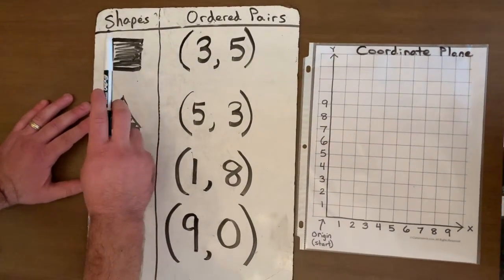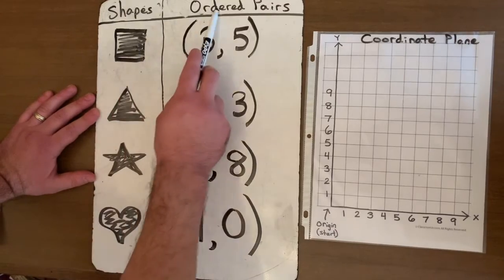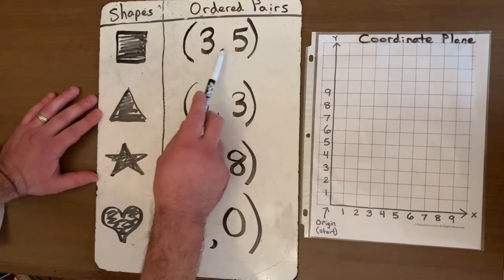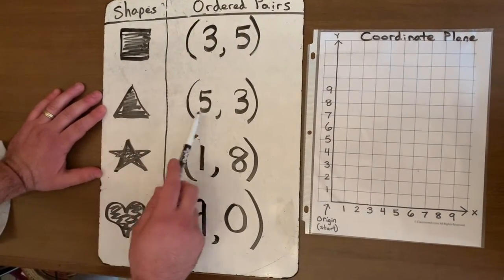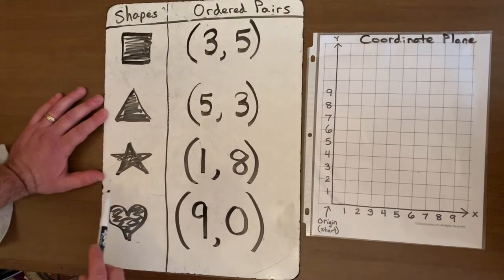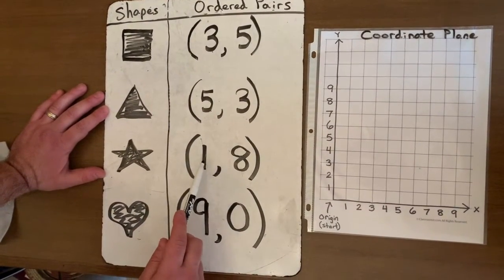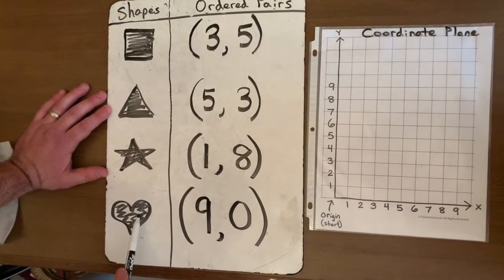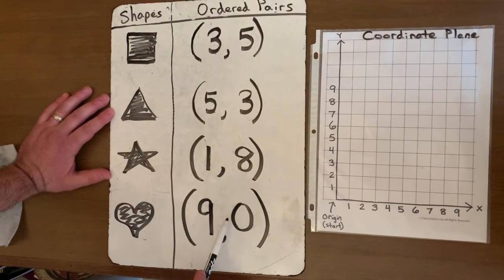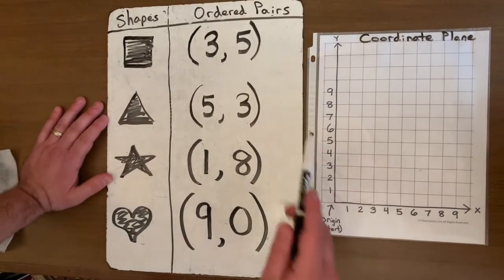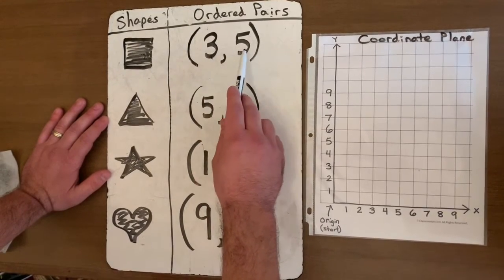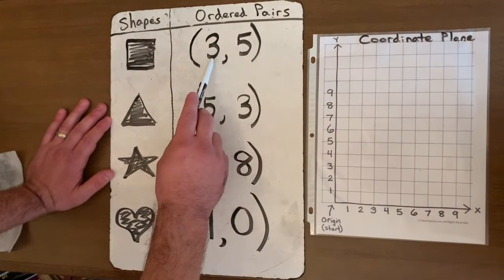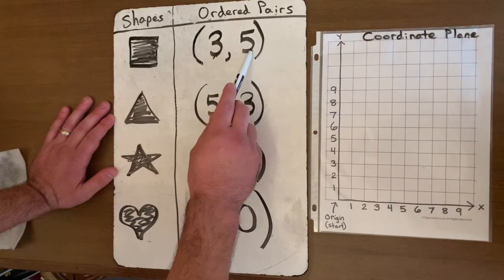What I have is a square and the ordered pair for the square is at 3, 5. For the triangle it's at 5, 3. The star is at coordinate 1, 8, and then the heart is at 9, 0. So the last couple days we've been looking at our x and our y-axis. Remember you are going to run and then jump.